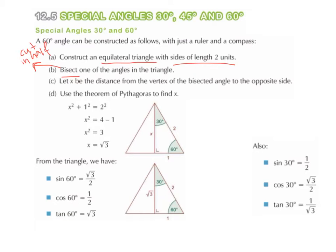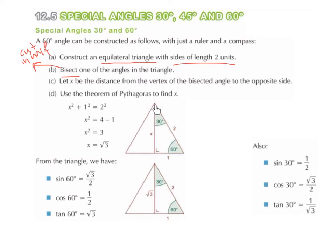If we have cut the triangle into 2 equal triangles, and the lengths were originally 2 units across, then the base of this new smaller triangle is now 1 unit. The side length is still 2 units — this is the hypotenuse of the smaller triangle, so this is 2 units. This is 1 unit. We do not know what the height is. Let x be the distance from the vertex of the bisected angle to the opposite side.